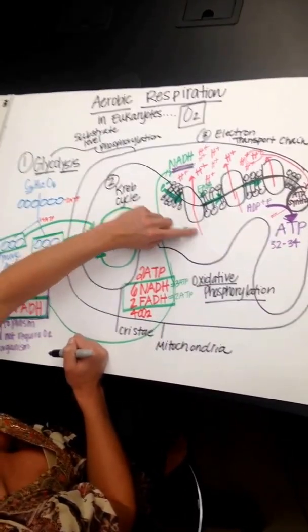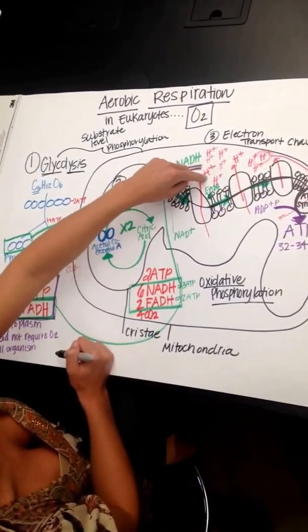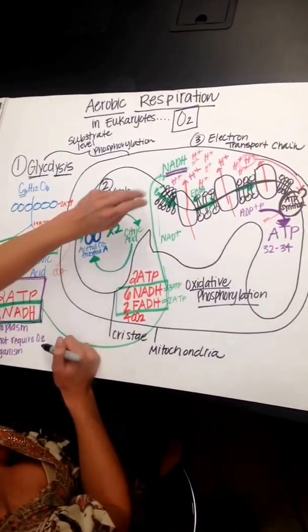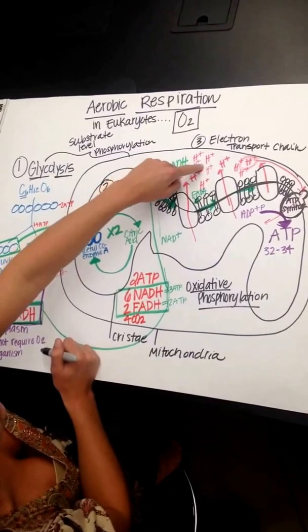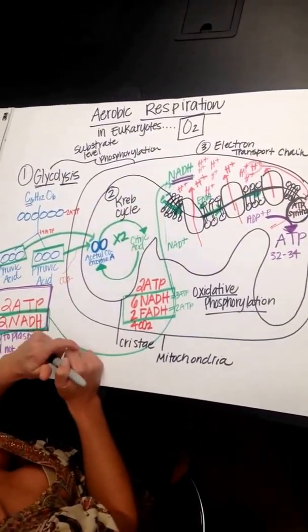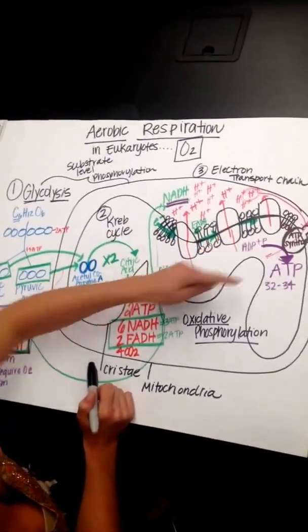Also, one thing I want to note, this is active transport, this pumping of hydrogens. And then, as the hydrogens go from high concentration to low concentration, it's passive transport. So this active transport working with passive transport is what we call chemiosmosis. And that chemiosmosis is how ATP is actually made, the active transport and the passive transport.